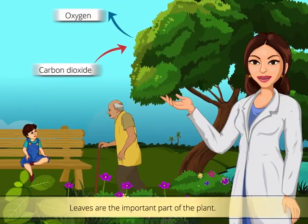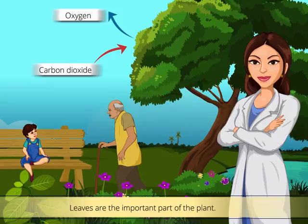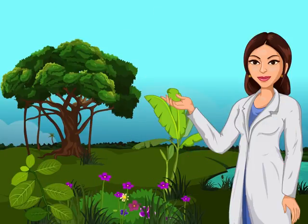Mohan's grandpa told him that leaves are an important part of the plant. So let us learn about leaves. Firstly, let us observe the shape of the leaves of some plants.